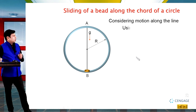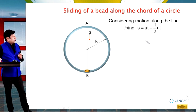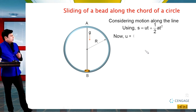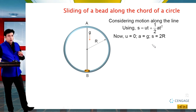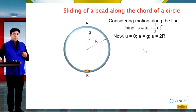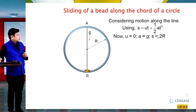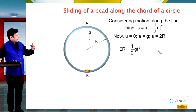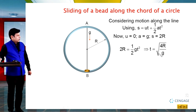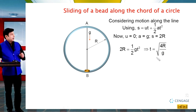Let us use the formula s = ut + ½at². Substituting the values: u = 0, a = g, s = 2R, we get 2R = ½g·t². Therefore, t = √(4R/g). This is the time of sliding along the diameter.